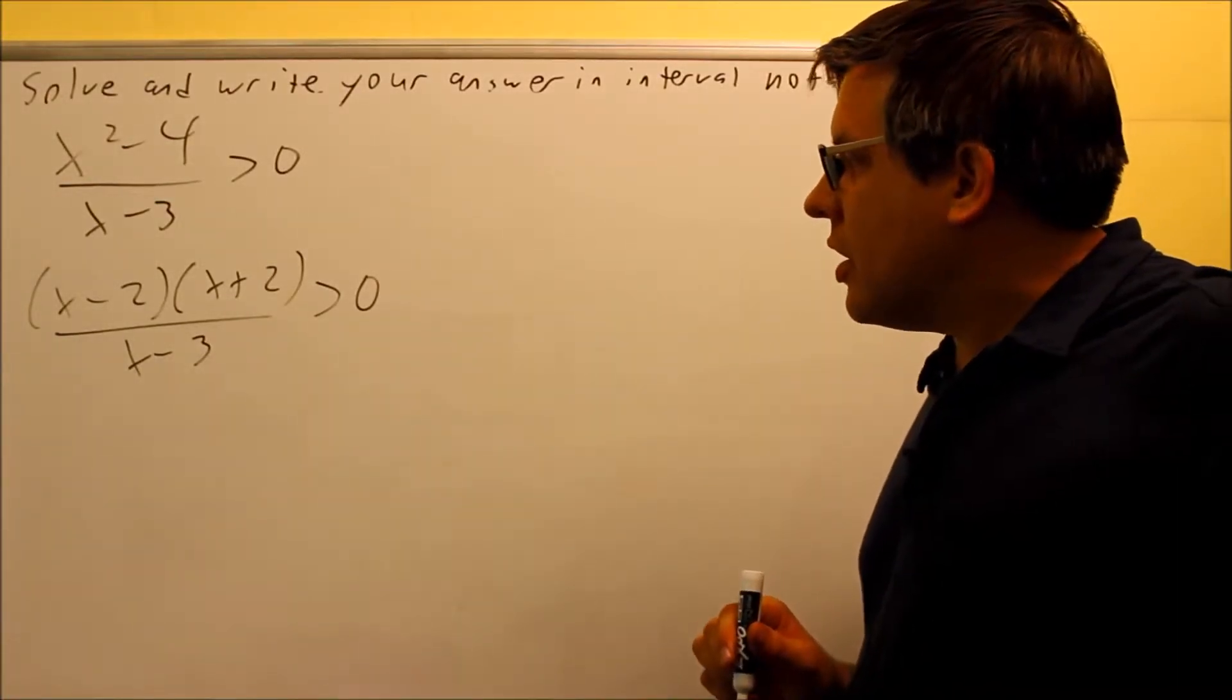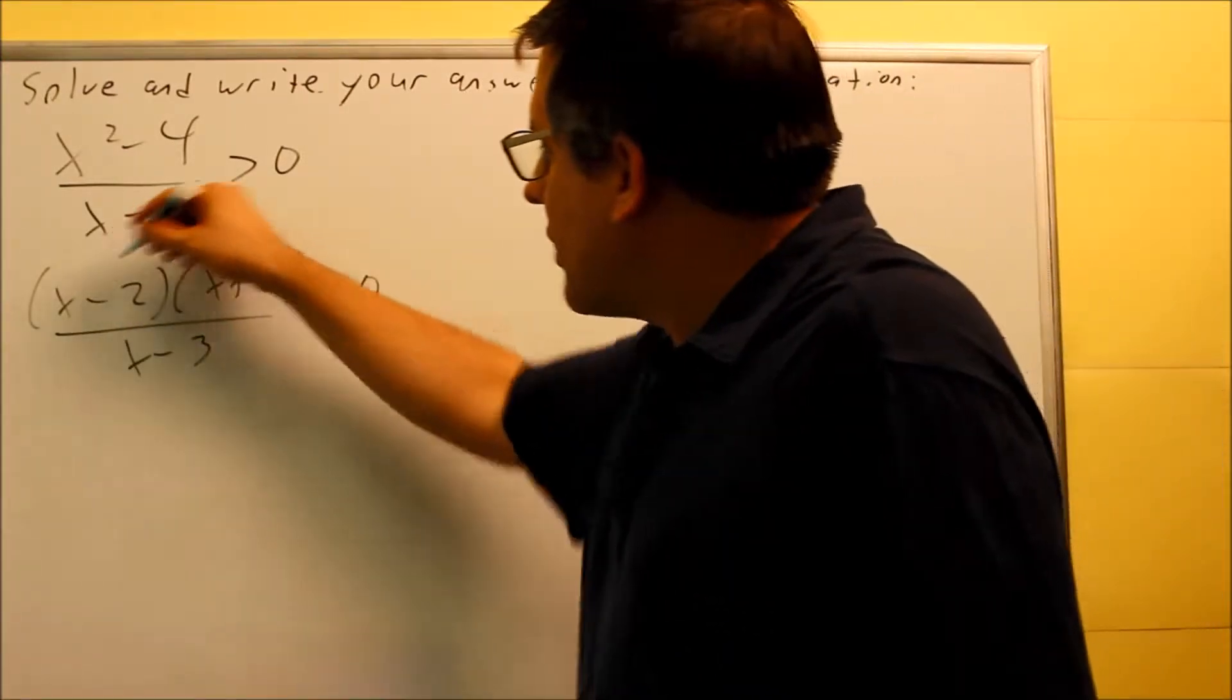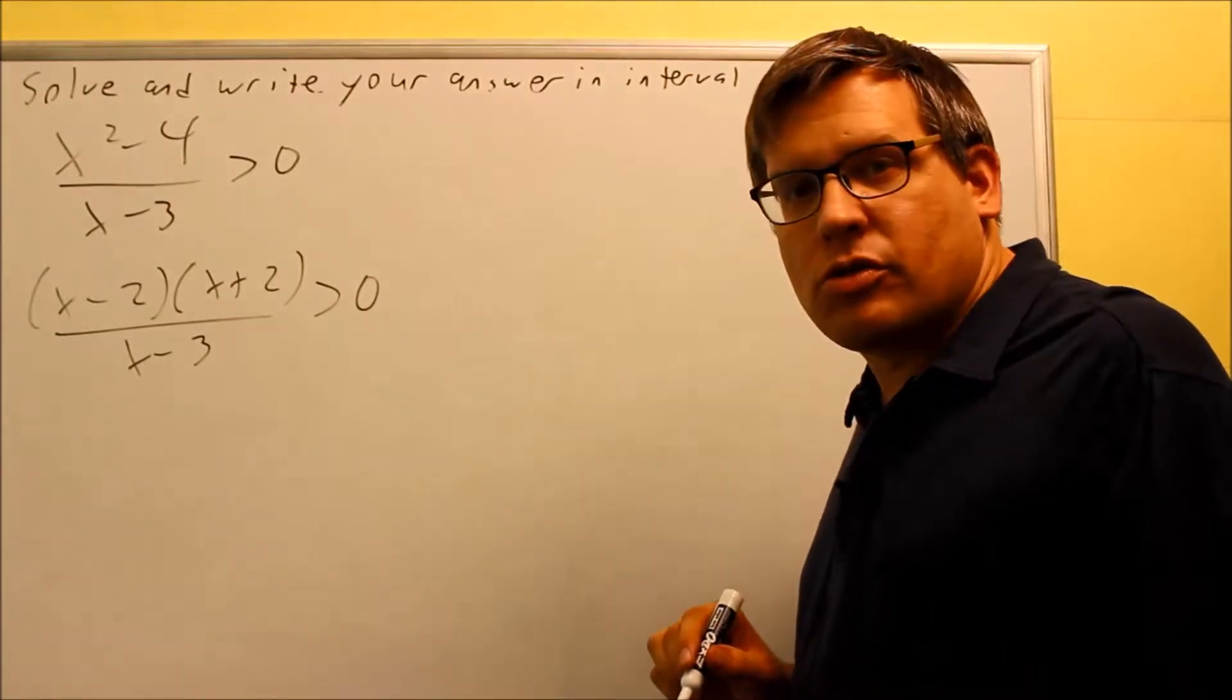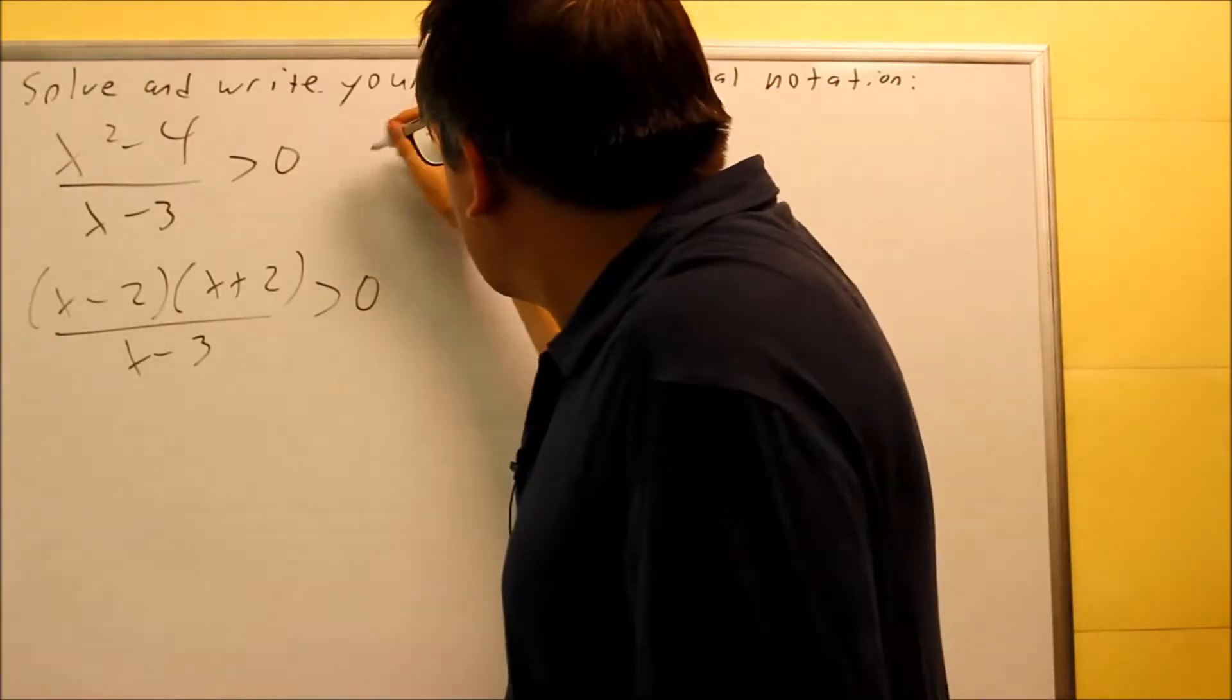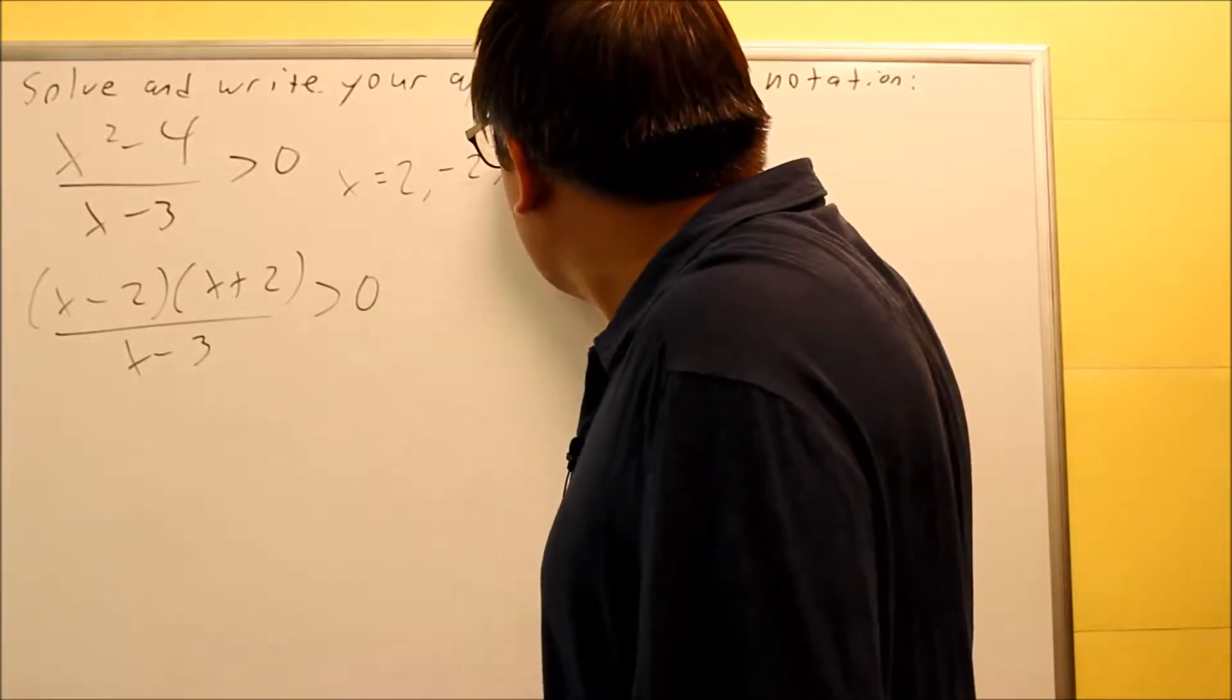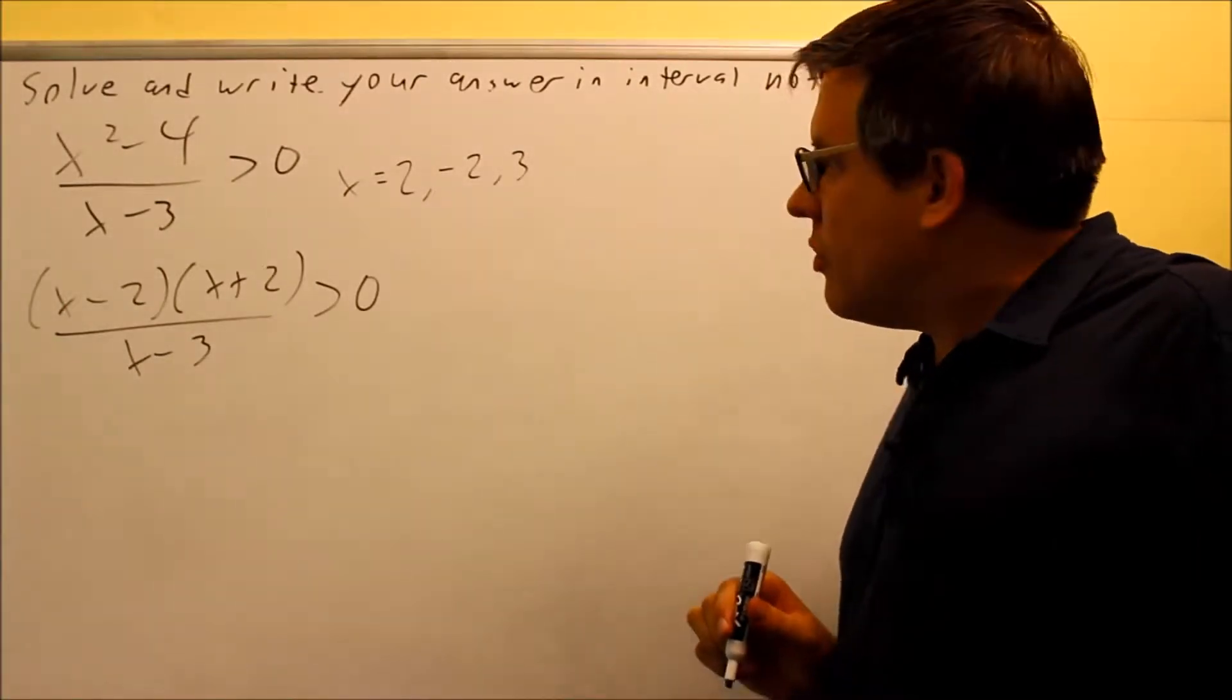Now that we have it factored, we're ready to see what numbers we're going to put on our table or on the number line. In this case, it's whatever makes each individual thing, top or bottom, which one of those makes it equal to 0. So first, I want to write down the numbers that make each of those 0: 2, negative 2, and 3. That's whatever makes the top or bottom equal to 0.